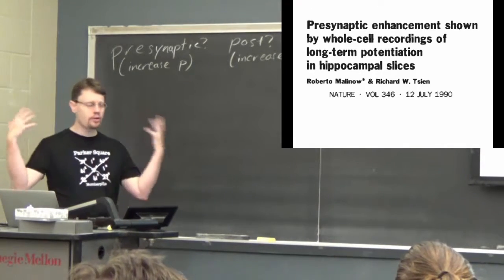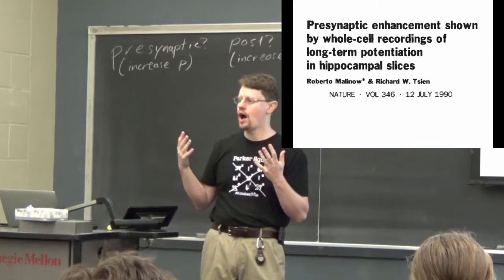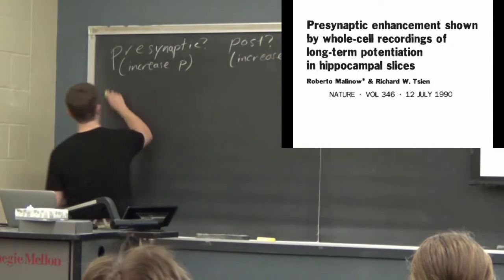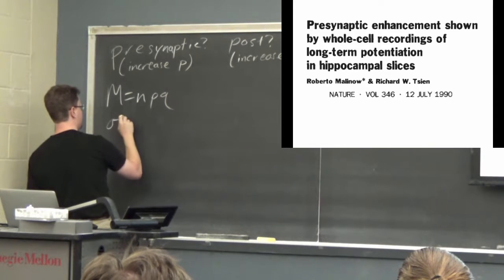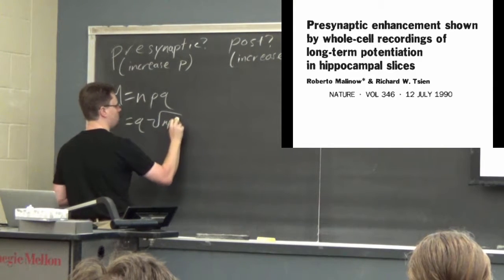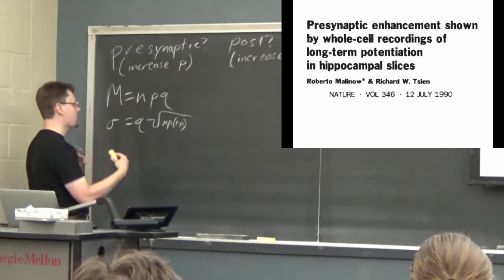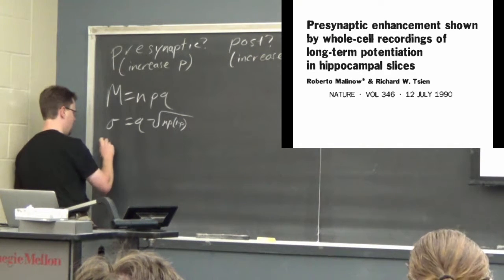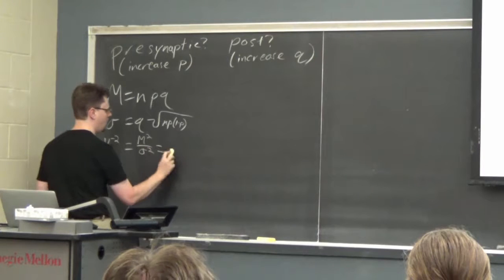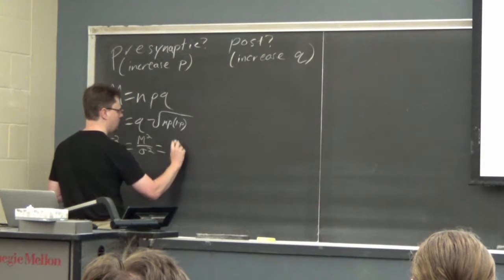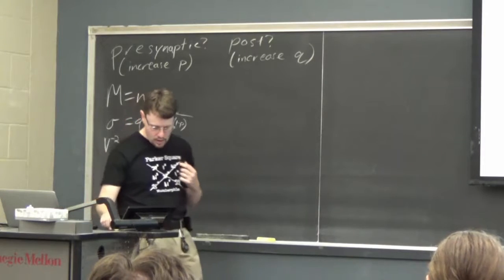Roberto Malinow had this theoretical work — he sat down and worked out something we already know: mean is expected to be N times P times Q, and standard deviation is expected to be Q times the square root of N times P times (1 minus P), which is just a consequence of doing algebra on those two things.